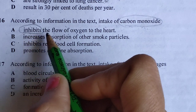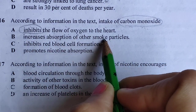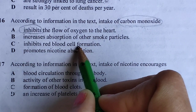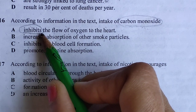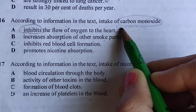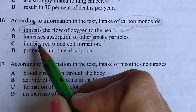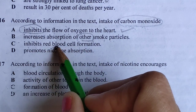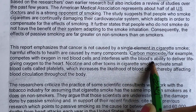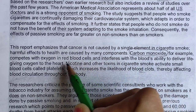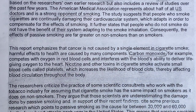Let's read the options: 'inhibits the flow of oxygen to the heart' — inhibits means disturb or interfere; 'increases absorption of small particles'; 'inhibits red blood cell formation'; 'promotes nicotine absorption'. Since the text says it interferes with the blood's ability to deliver life-giving oxygen to the heart, we go with option A: inhibits the flow of oxygen to the heart. Increases absorption of smoke particles — no. Inhibits red blood cell formation — actually it said it activates blood cells. So the answer is inhibits flow of oxygen.